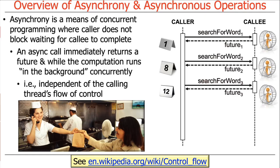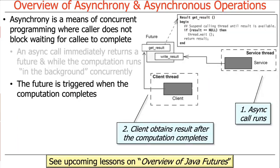The best examples are fast food restaurants, and we'll talk about that more as we get into the concept of futures. When the asynchronous computation completes, the future is considered to be triggered — it's notified. You guys are all very familiar with the concept of triggering because you have that on your smartphone.